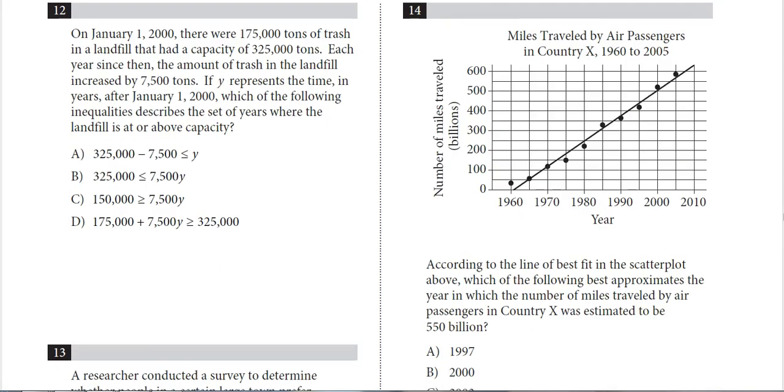Number 12, January 1, 2000, there was 175,000 tons of trash in a landfill that had a capacity of 325, so still just a little bit more than halfway full. Every year since then, the amount of trash increases by 7,500. And Y represents the time in years after that date, which inequality describes the set of years where we are at or above capacity.